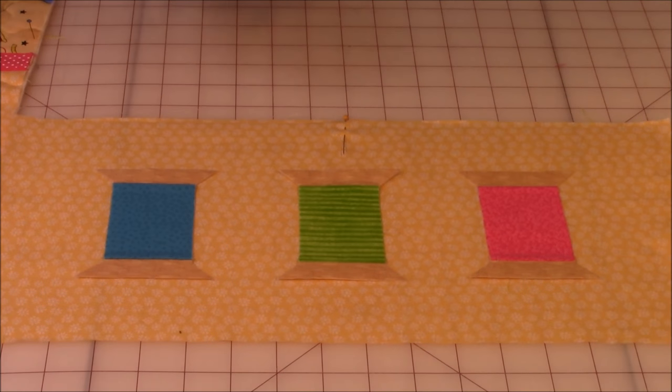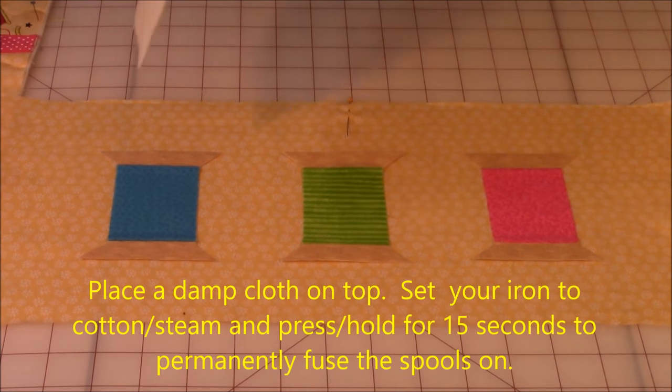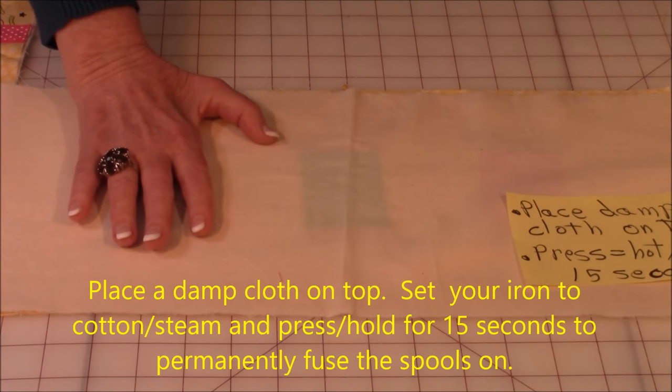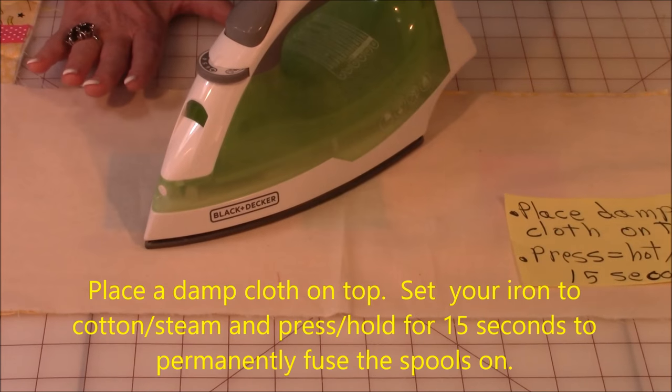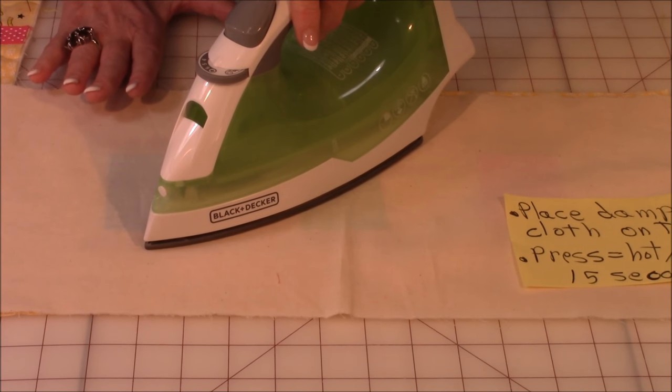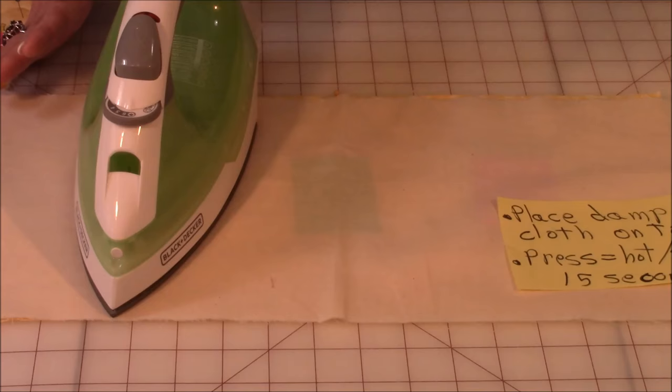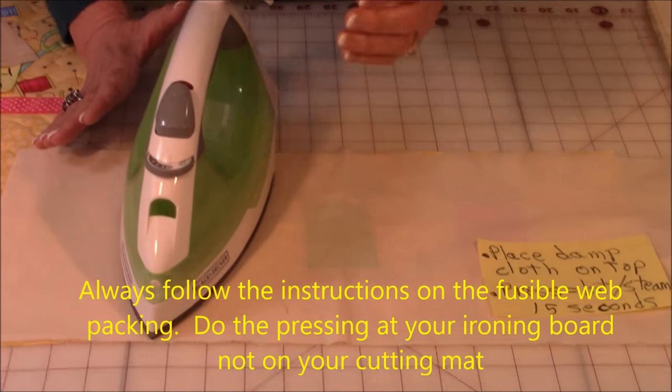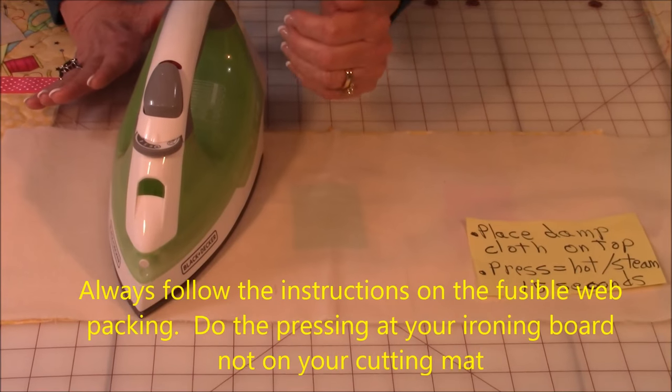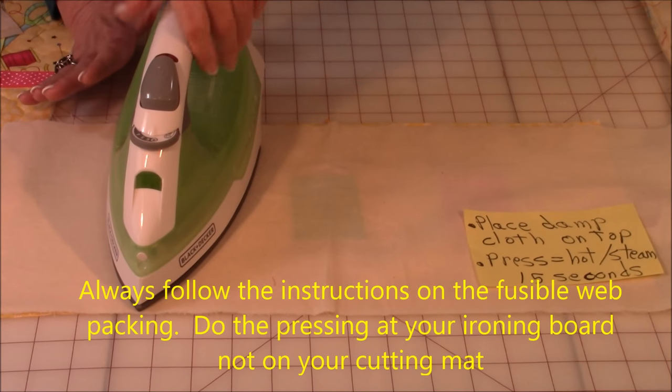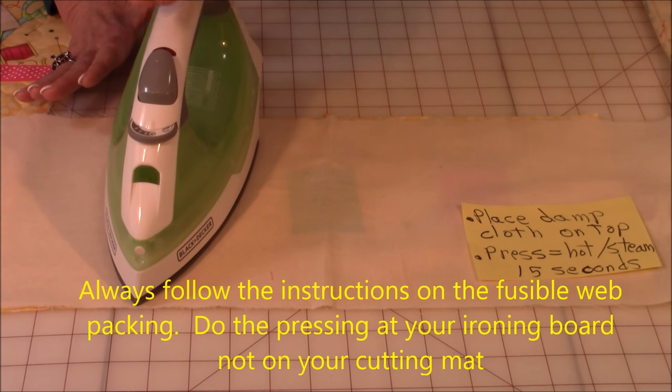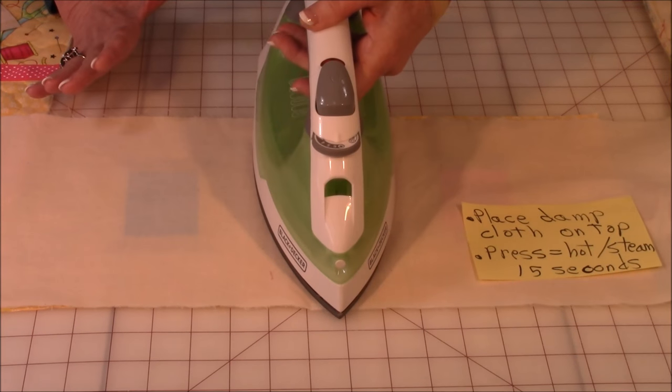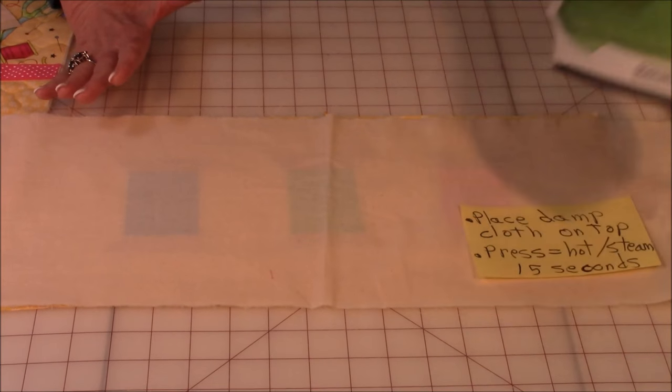Take a damp cloth. Place it over the spools. And set your iron to cotton with steam. Place the iron over it. Now always follow the instructions on your package because your fusible webbing may be different than mine. Then give it a burst of steam. Hold it for 15 seconds. Do each spool. Going across. Holding it for 15 seconds.